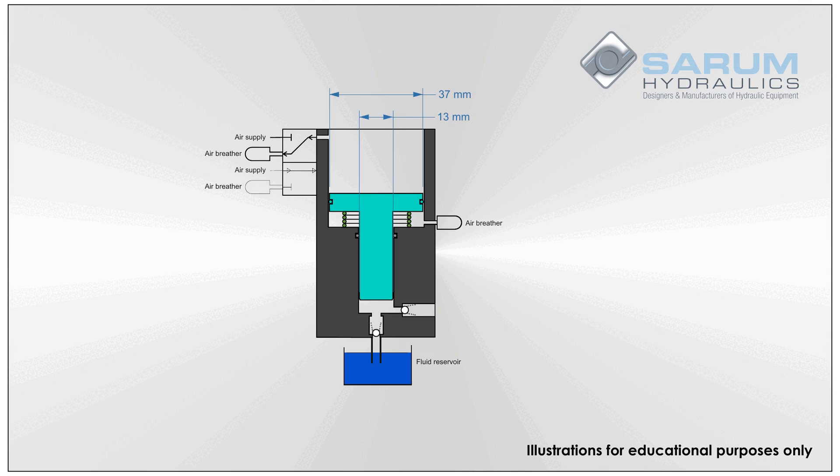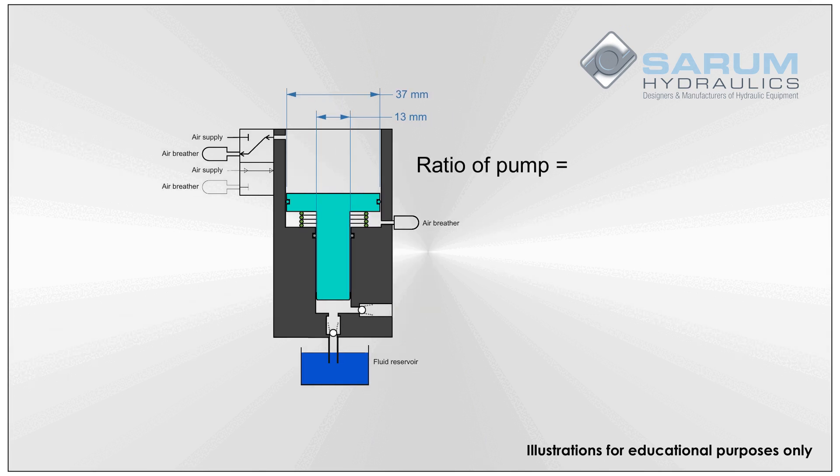In our example, our air piston is 37mm in diameter and the hydraulic piston is 13mm in diameter. This results in an area of roughly 10.75cm squared on the air piston and an area of about 1.33cm squared on the hydraulic piston.